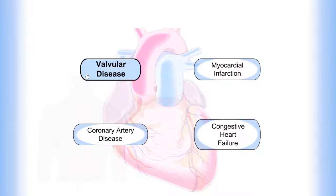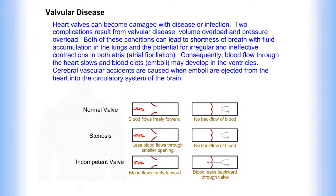Valvular disease. Heart valves can become damaged with disease or infection. Two complications result from valvular disease: volume overload and pressure overload. Both of these conditions can lead to shortness of breath with fluid accumulation in the lungs and the potential for irregular and ineffective contractions in both atria.